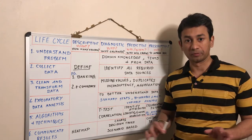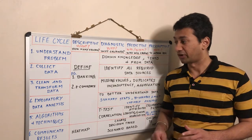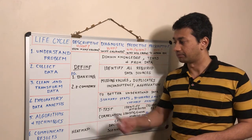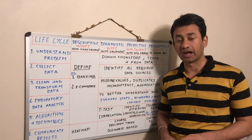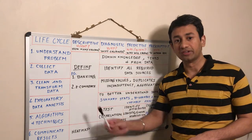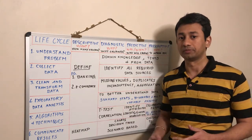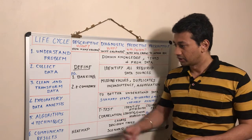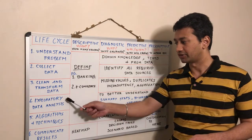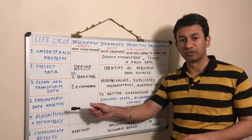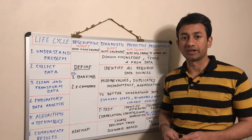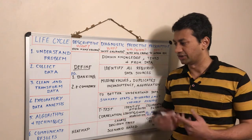The third step is cleaning and transforming the data. Data that we use will not be clean and will require a lot of transformation. Hence, it is really important to perform these activities so that they can be used for further analysis, as well as by our models. The fourth step is exploratory data analysis. This is the most important step, as this is where we analyze the data using different techniques and understand what the data actually tells us.